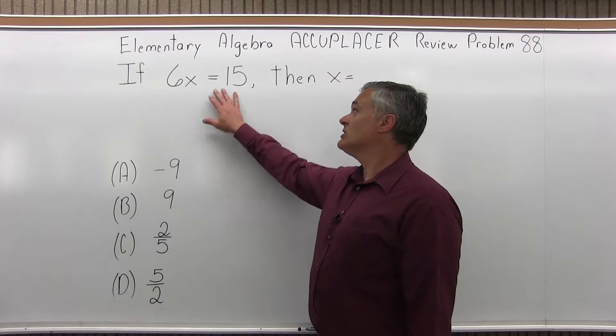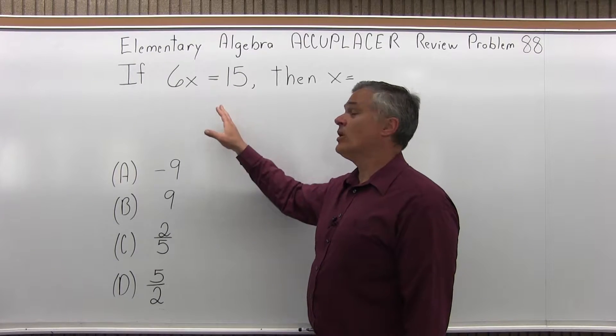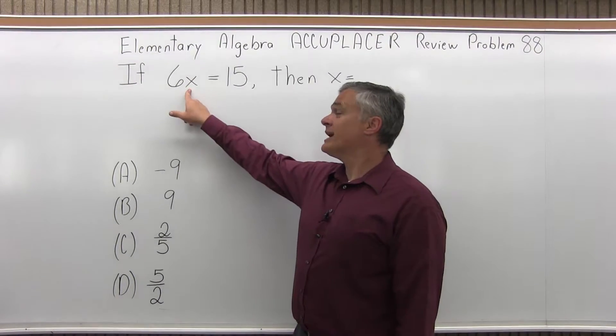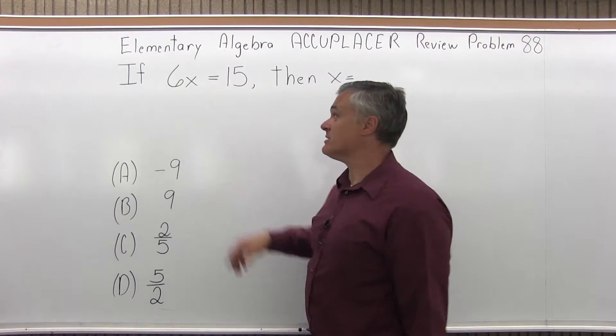So we have an equation and the rule says you can do anything you want as long as you do the same thing on both sides of the equation. Now I want to know what x is, not 6x, I want to get rid of this 6.